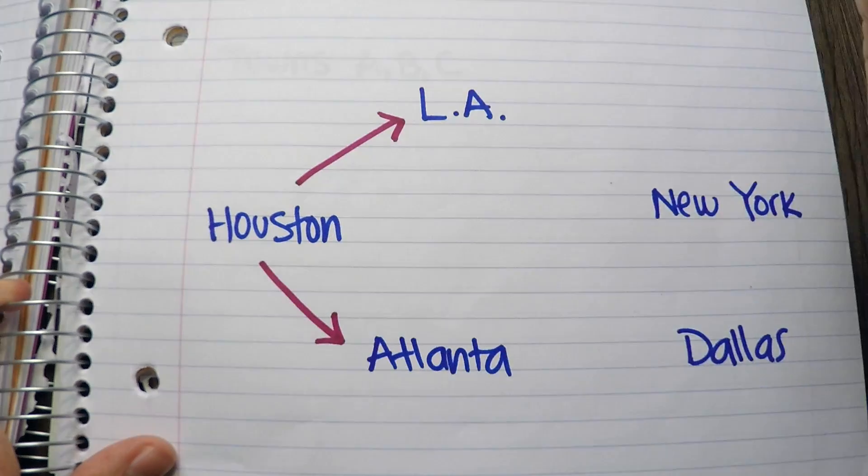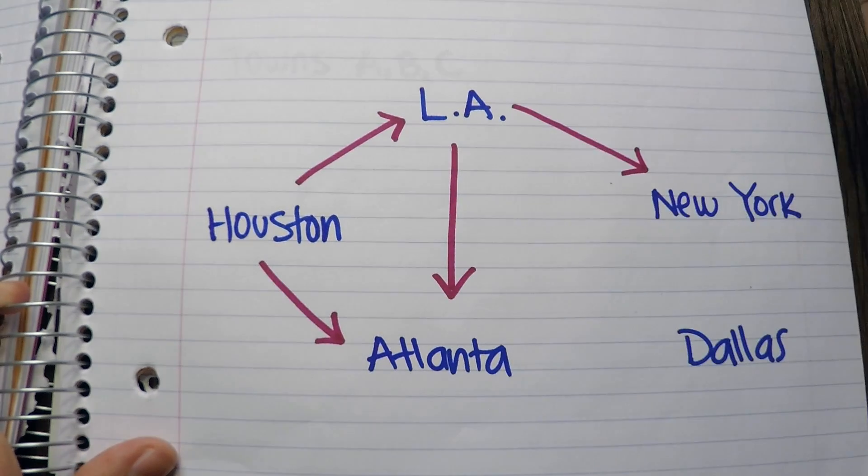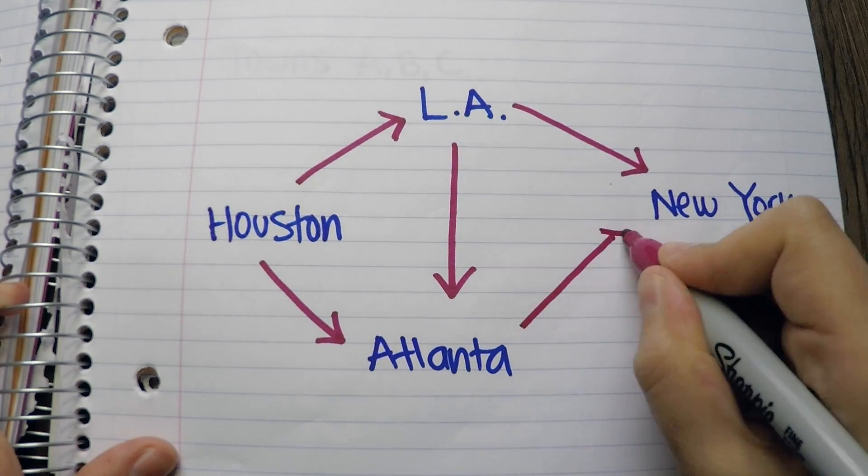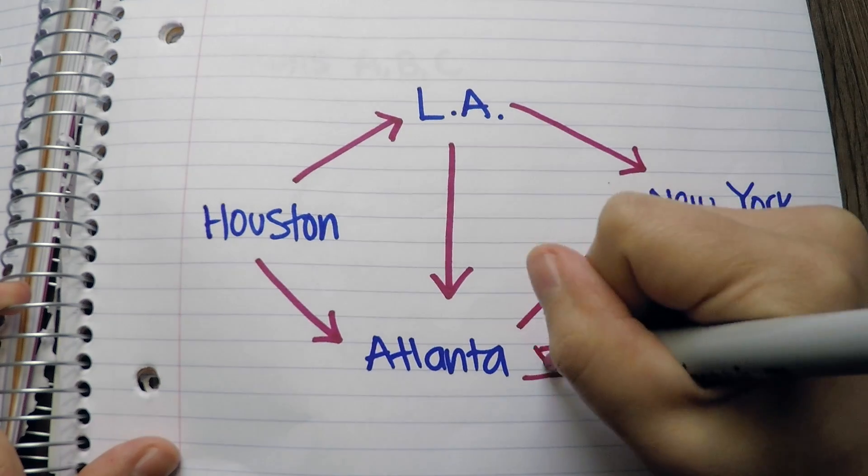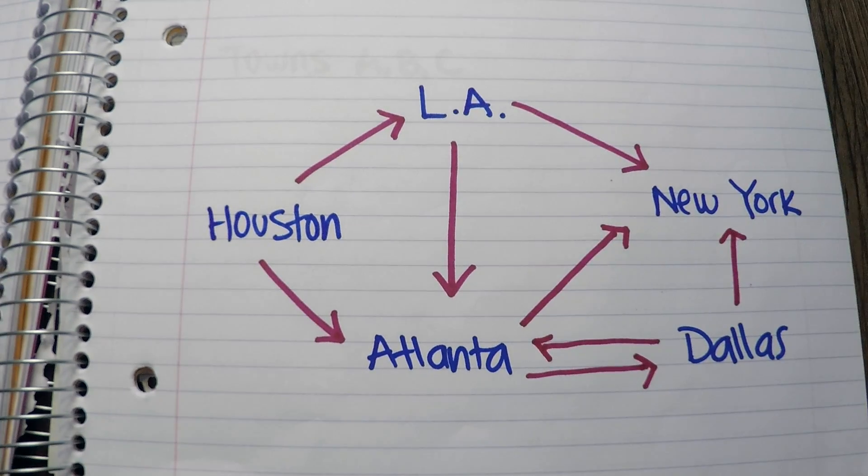Say there's a salesman who needs to go to Houston, LA, Atlanta, New York, and Dallas. And each city is linked to one or more cities. You want to find the shortest route that will pass through each city once and only once.